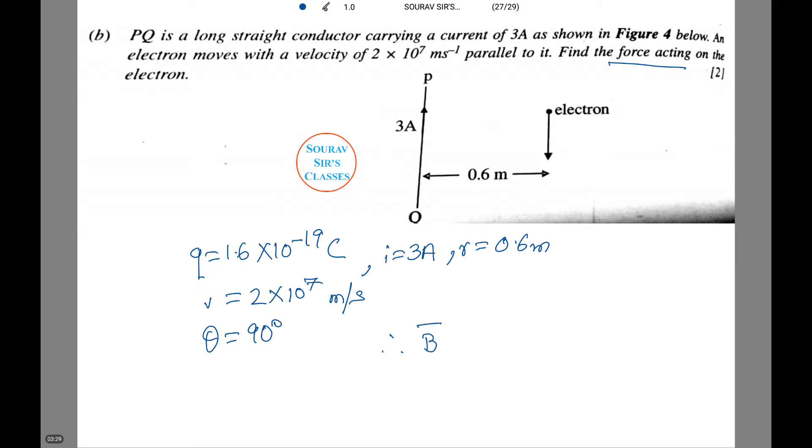Q equals to 1.6 into 10 to power minus 19 coulombs. I equals to 3 A. R equals to 0.6 meters. V equals to 2 into 10 to power 7 meters per second, and theta equals to 90 degrees.